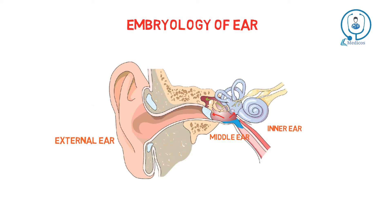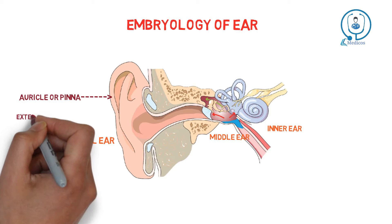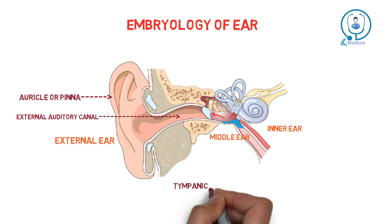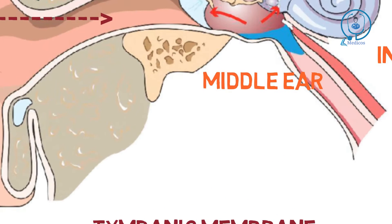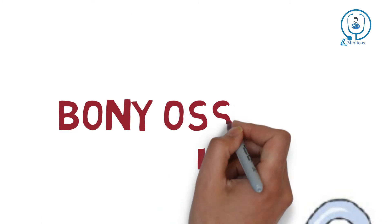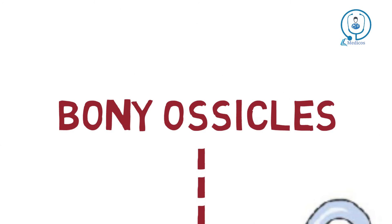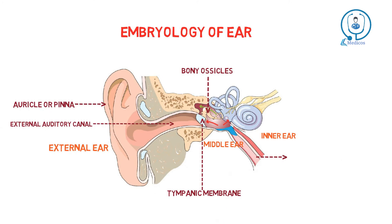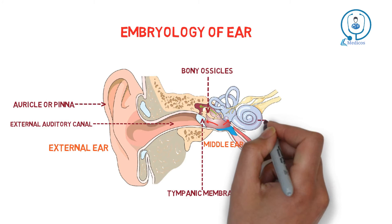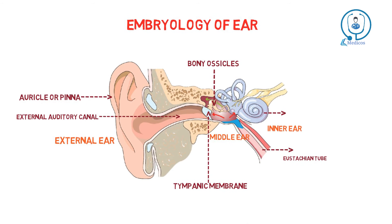The external ear consists of the auricle, also called the pinna, and the external auditory canal. The middle ear consists of the tympanic membrane, which divides the middle ear from the external ear, and also contains bony ossicles. There is also the Eustachian tube. The inner ear contains the bony labyrinth — that is, the cochlea — and the membranous labyrinth.